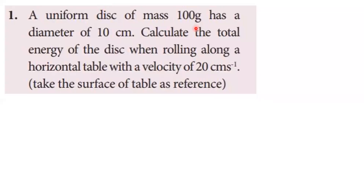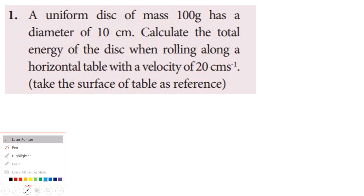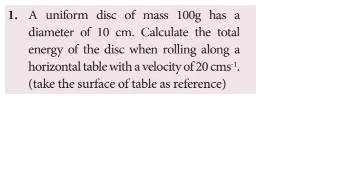A uniform disk of mass m and diameter 10 cm is rolling along a horizontal table with a velocity of 20 cm per second. Calculate the total energy of the disk. When an object rolls, it has both translational motion and rotational motion. For pure rolling, the velocity of the center of mass equals r × omega.